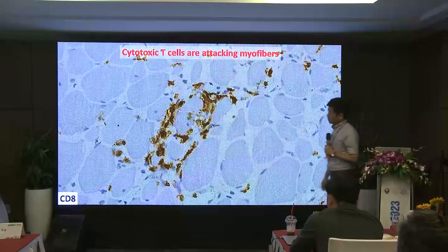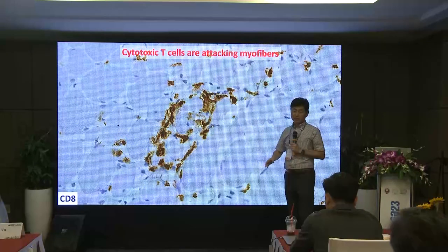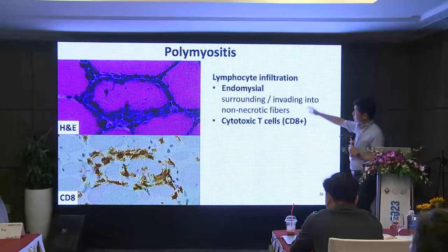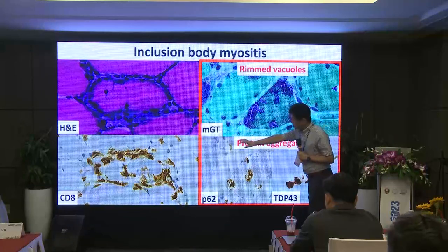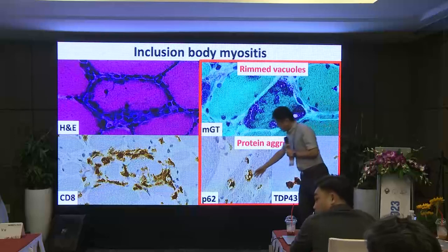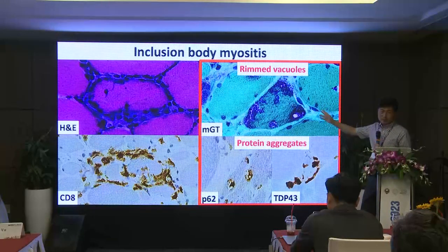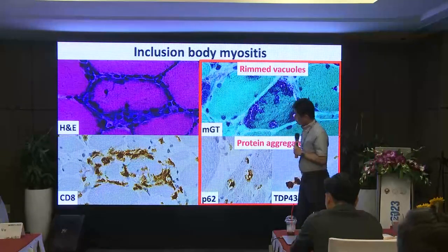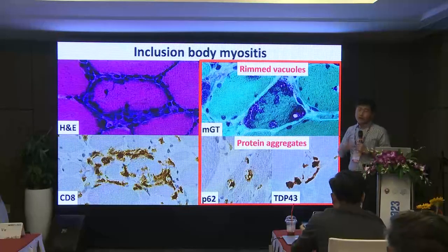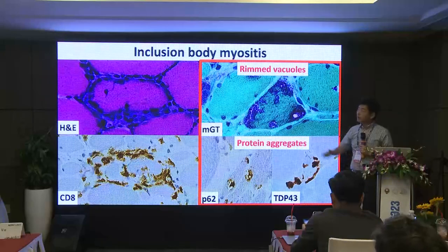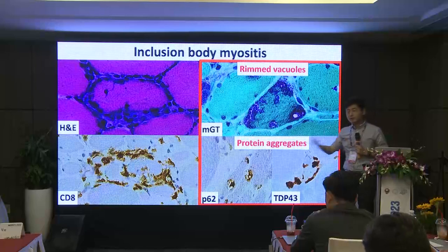If you do immunohistochemistry, many of those lymphocytes are CD8 positive — CD8 cells are cytotoxic T cells, really toxic to myofibers. But you have to be careful: if you see in addition rim vacuoles, or p62 aggregate, or TDP-43 aggregate, the diagnosis changes to inclusion body myositis. A number of papers have reported that pathologically diagnosed polymyositis cases almost all later developed inclusion body myositis. So now, increasing numbers of muscle pathologists believe that polymyositis does not exist — at least pathologically defined polymyositis. In the last 10 years in our laboratory, I have never made a pathological diagnosis of polymyositis.